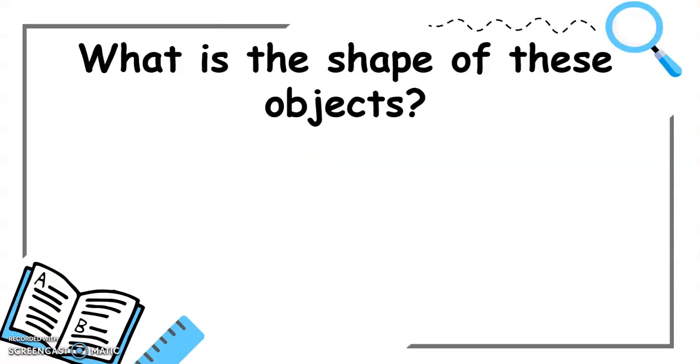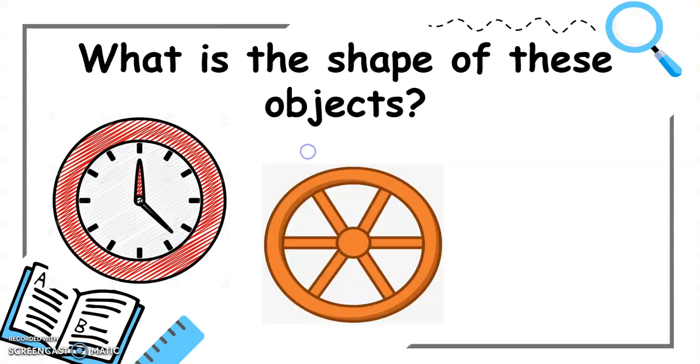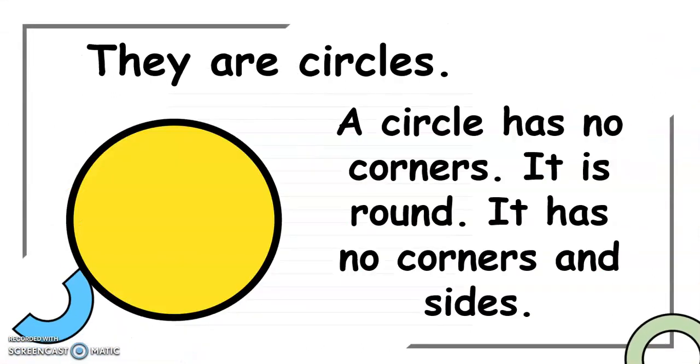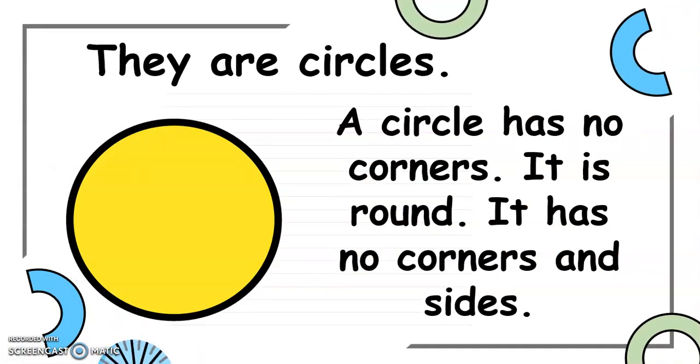What is the shape of these objects? Yes! They are circles. And a circle has no corners. It is round. It has no corners and no sides.